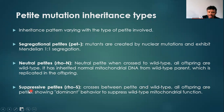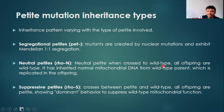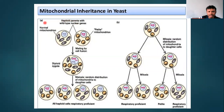In suppressive petites crossed with wild type, all offspring are petite — meaning the petite is suppressing the effect of wild type. In neutral petites crossed with wild type, all offspring are wild type — meaning petite has no role to play when normal mitochondria are present. Segregational petites follow normal Mendelian one-to-one segregation. As petite colonies increase they become more deficient in producing enzymes necessary for the mitochondrial pathway or respiratory chain pathway.